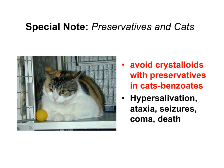A special consideration for cats is that you want to avoid crystalloids — solutions with just electrolytes and no other components — when they have preservatives. Some solutions will have benzoates, benzoic acid in them. You want to look at these and definitely avoid them in cats because, as you learn in pharmacology, cats do not metabolize these compounds very rapidly. Particularly if you're giving high rates of these fluids to a cat, they can lead to serious signs, and eventually you can kill the animal because they just cannot handle and metabolize these compounds.